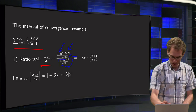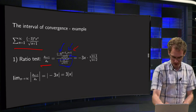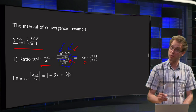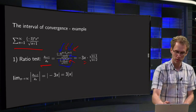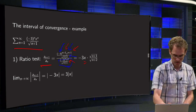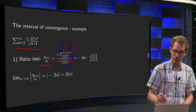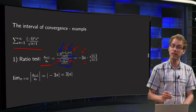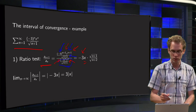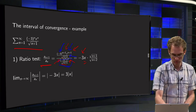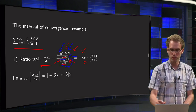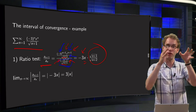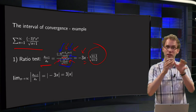The x^{n+1} over x^n gives you a factor x. It simplifies further: minus 3 to the power n+1 over minus 3 to the power n yields a factor minus 3, and we are just left with the square root of n+1 and square root of n+2. So first take a_{n+1} over a_n and then simplify.